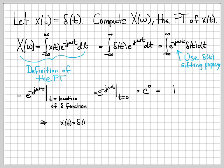So we've computed that if our time domain signal is x of t equals delta of t, then by the definition of the Fourier transform, x of omega equals 1. This gives us a new Fourier transform pair: an impulse in time gives us a constant — specifically the value 1 — in the frequency domain.